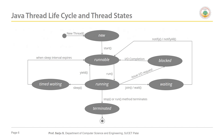Next, the lifecycle of a thread. We have different stages: New, Runnable, Running, Terminated, Blocked, Waiting, and Timed Waiting. A thread can be in any one of these states during its lifecycle — new state, runnable state, running state, blocked, waiting, timed waiting, or terminated. These are also called the lifecycle events of a thread in Java.